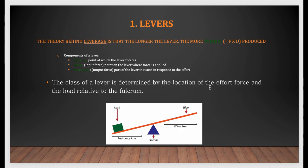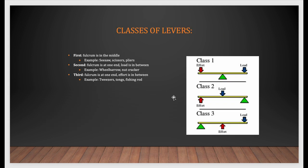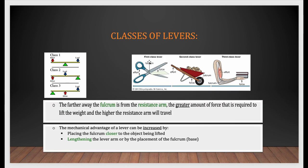The first simple machine is the lever. You need to know the different components of a lever: fulcrum, effort, and resistance. Here is an example of mechanical advantage of a lever — length of the effort arm over length of the load or resisting arm. You also need to learn the classes of levers: first class, second class, and third class. We have examples showing all three classes, so make sure you have a clear idea on that.